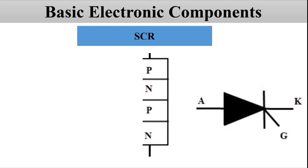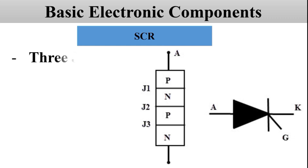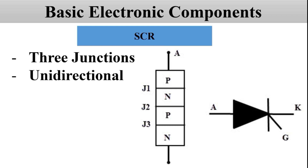There are three junctions — J1, J2, and J3. In order to turn on the SCR, the anode terminal must be at a higher positive potential than the cathode, meaning the SCR should always be forward biased. The direction of the anode and gate current are conventional current directions, which clearly indicates that SCR is a unidirectional device and that the gate current can only be positive — it can flow only in one direction, into the gate terminal.